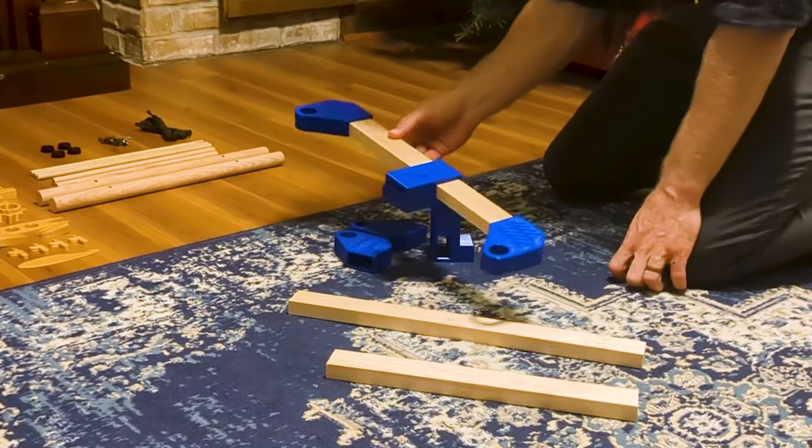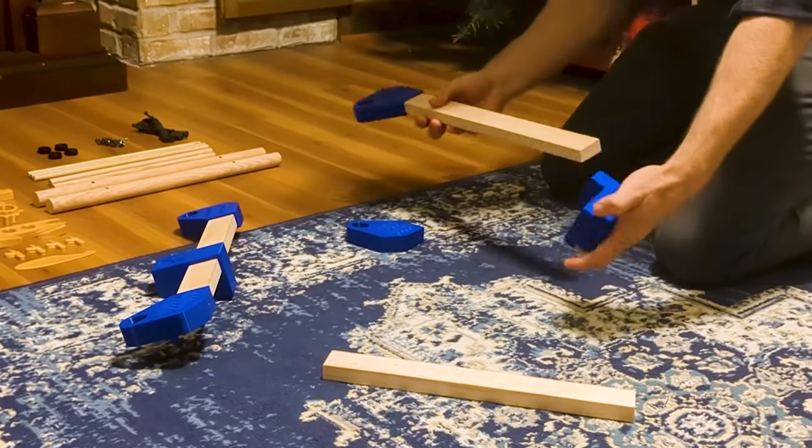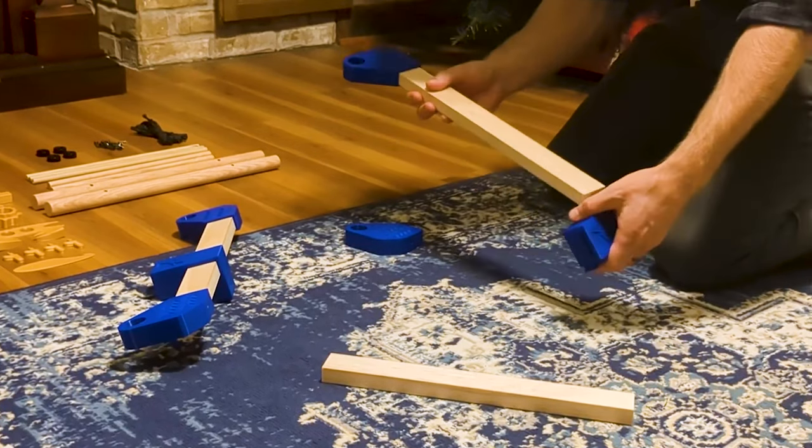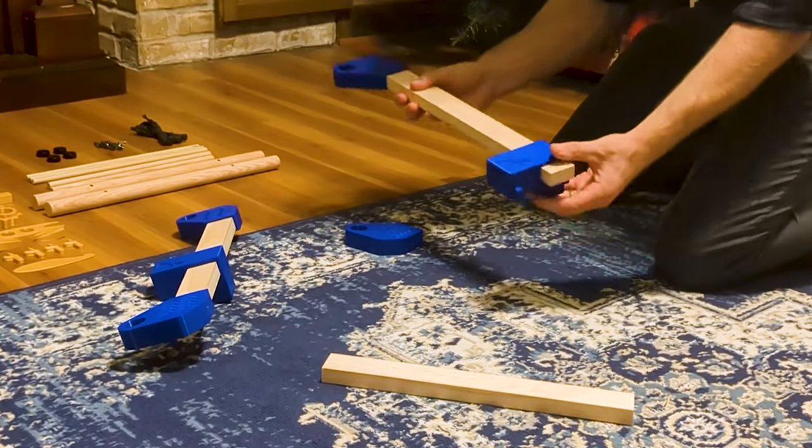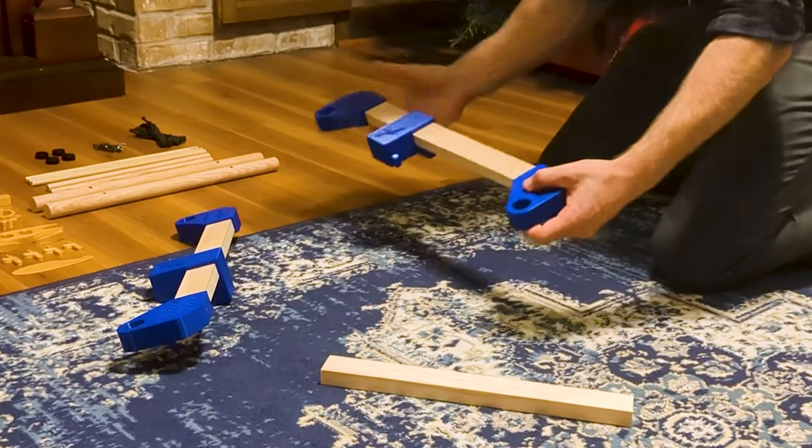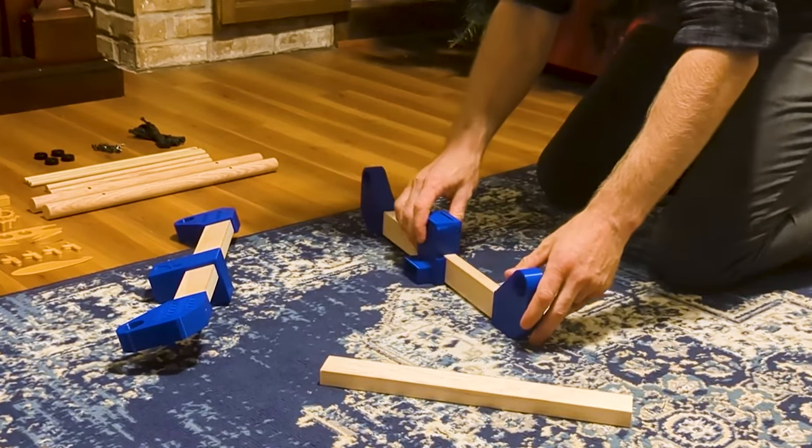And then we do the same thing with the other side. The square end again goes opposite from the direction of this texturing. And the other cap goes on. This is the basic of the frame.